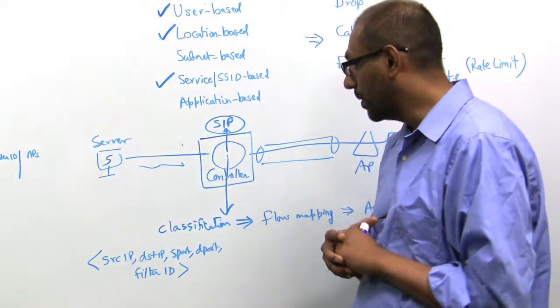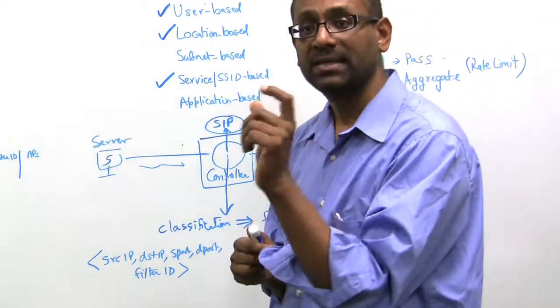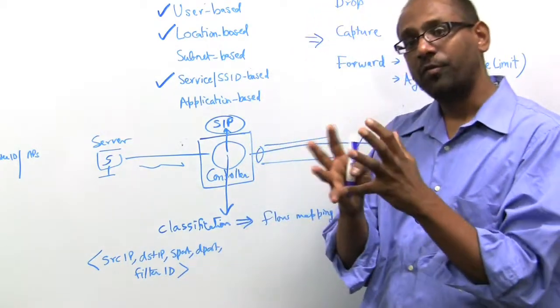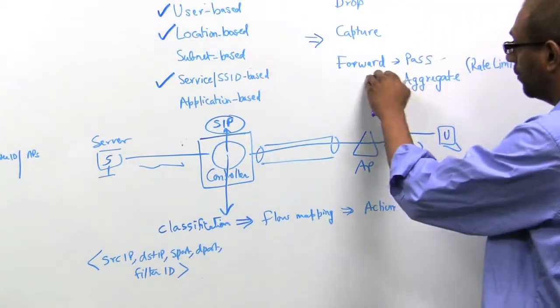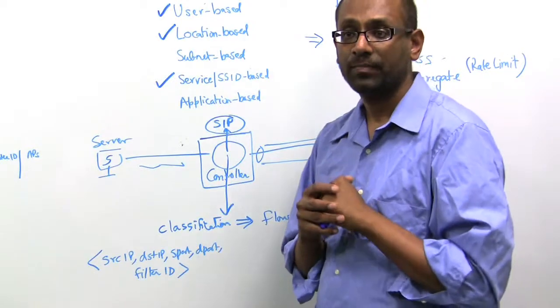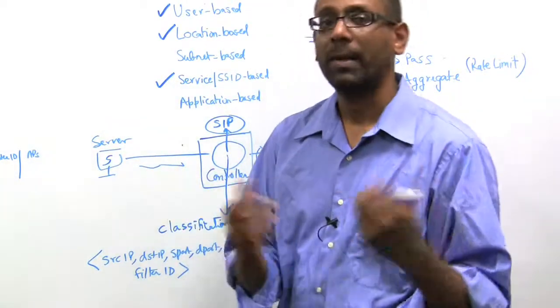For computer science students, we would specify two ESS profiles, both advertising the same SSID. The first ESS profile would apply only in the computer science building, and there the action, once we forward the packets, we would tag the packet with higher quality of service. While in the dorm, everybody would go untagged. In other words, all packets would pass as is.